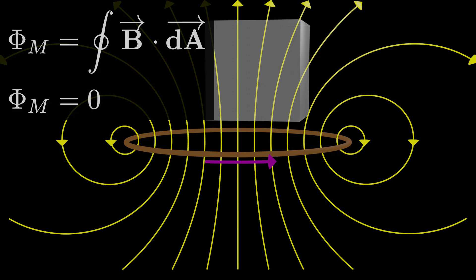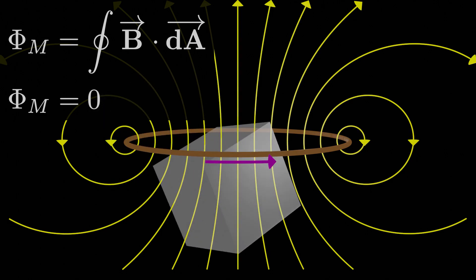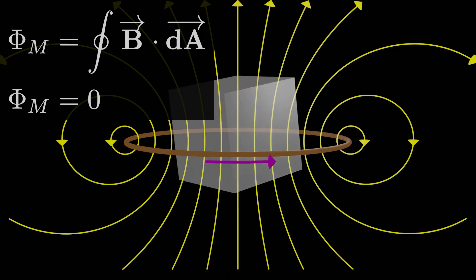There's no net magnetic flux through any closed surface you could ever draw, and nobody has ever found a situation that would indicate otherwise. Another way of saying exactly the same thing is that magnetic field lines don't originate or terminate anywhere. They always form these curvy loops that go round and round.